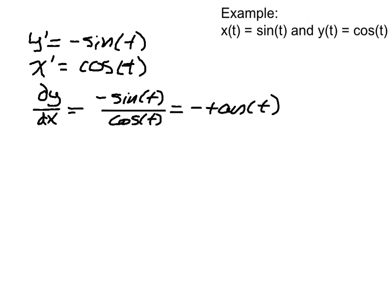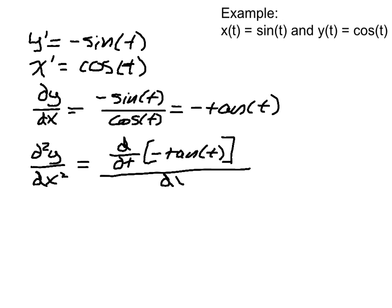Okay, so the next thing I'm going to do is find the second derivative. So that's this crazy notation. And the way I find that is I take the derivative of this with respect to t. So let me do that. That's going to be, well, let me write it, I guess. Negative tangent of t. And then I'm going to divide by dx/dt.